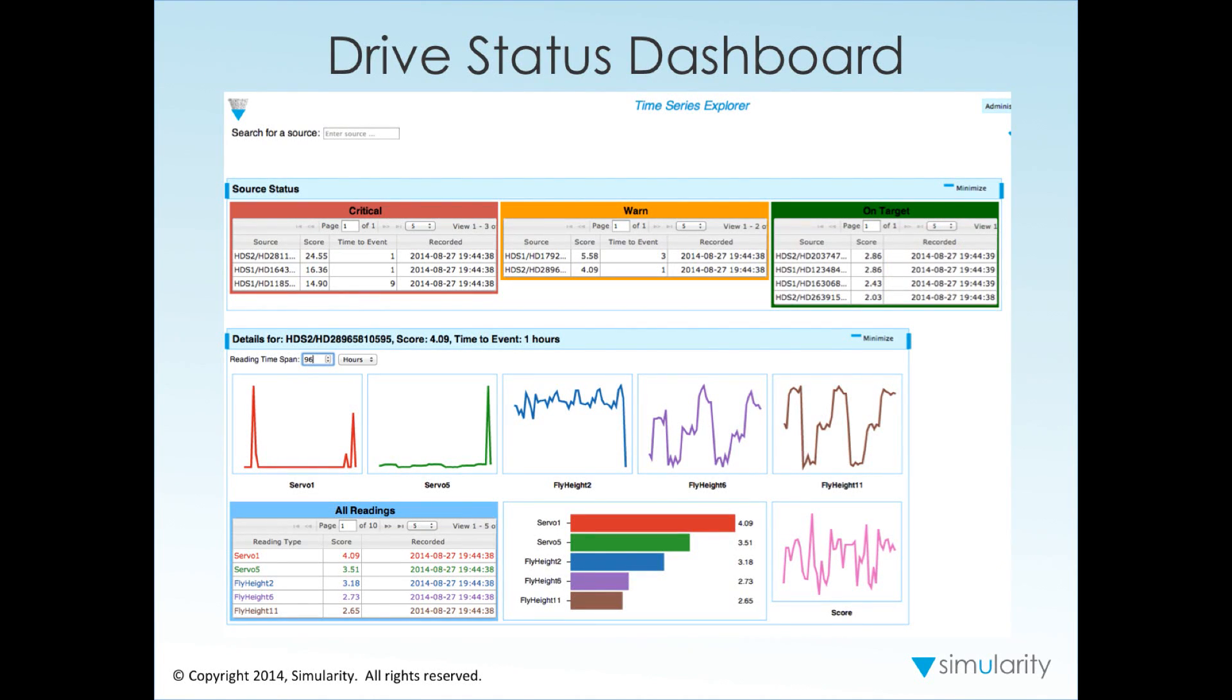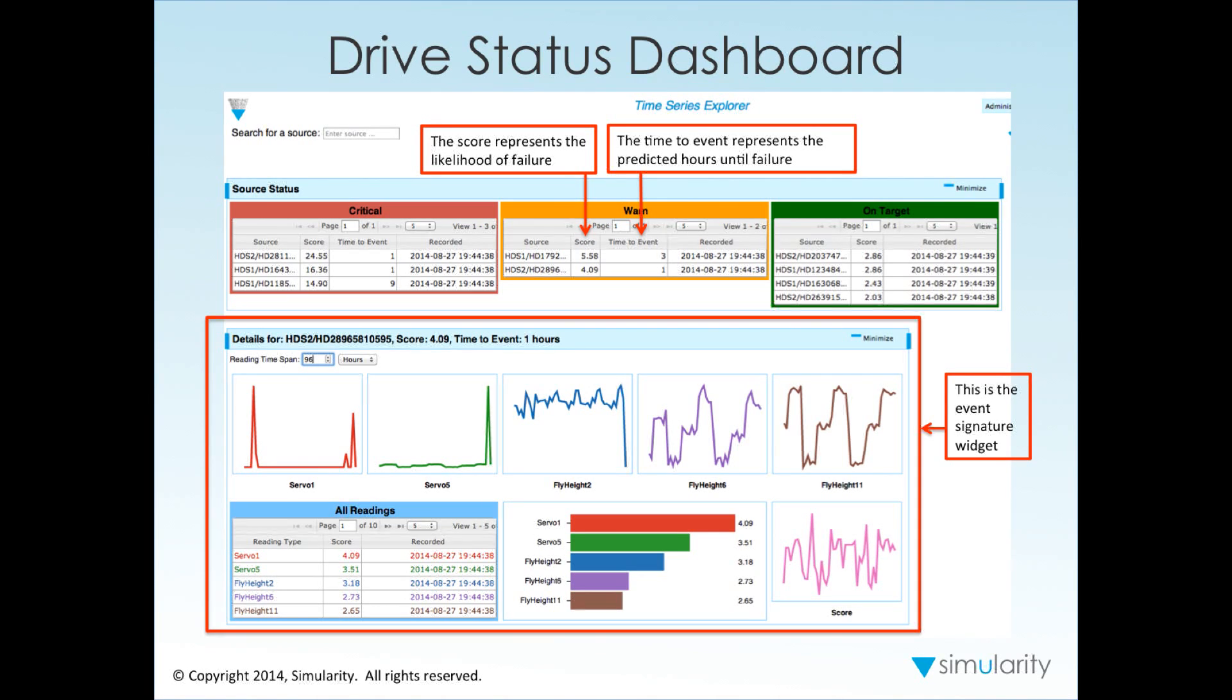Here we have a drive status dashboard, and we are monitoring all of our drives. The summary status is up here for all of our drives, and the score represents the likelihood of failure. We also have a time to event that represents the predicted hours until failure. We clicked on one of these failed drives that are in the critical state with only a one hour time to event, and this is the event signature.